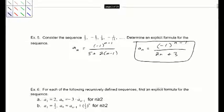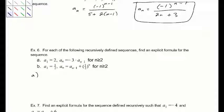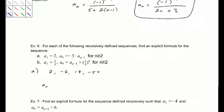Next we have some recursive sequences. For part a: a sub 1 equals 2, and each term multiplies by negative 3. So the sequence is 2, negative 6, 18, negative 54. We can write that as a sub n equals 2 times (negative 3) to the (n minus 1). Plugging in n equals 1 gives 2; n equals 2 gives negative 6.